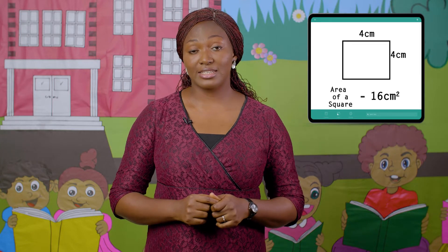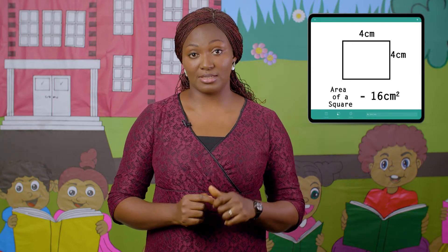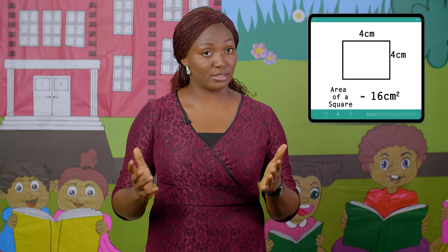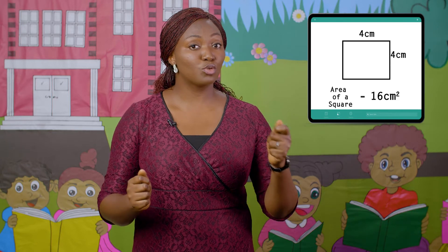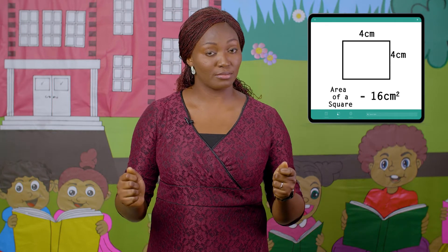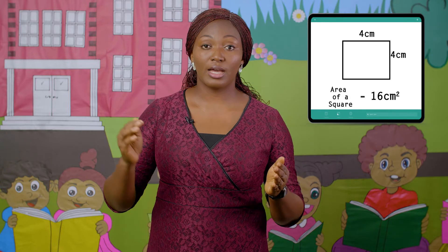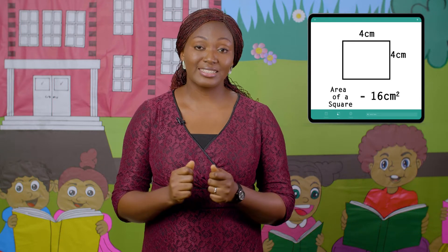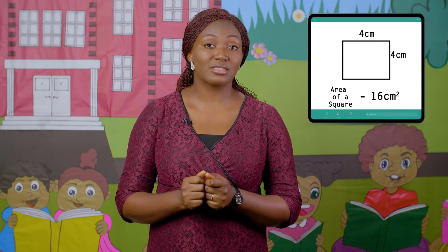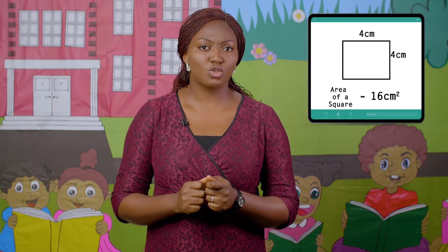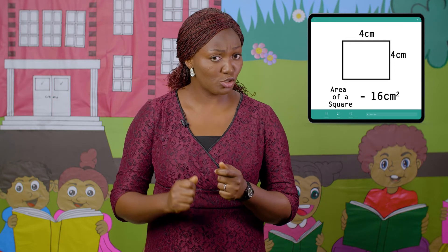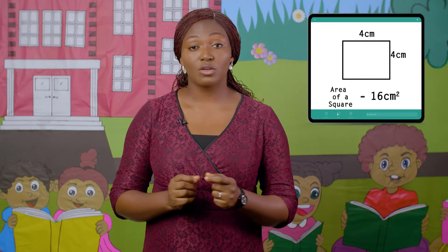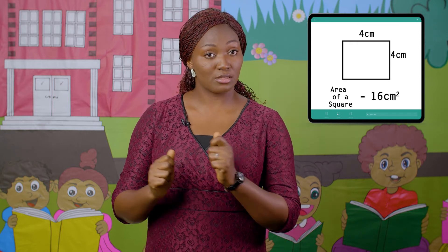Areas are calculated in square units, because in squares and rectangles we are multiplying two lengths together — length A and length B. These two lengths multiplied together means that their units are also coming together, so we have a square unit. If it's centimeters, we have centimeters squared. When it is meters, it is meters squared.